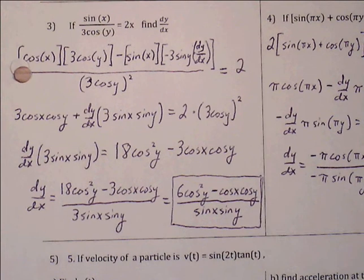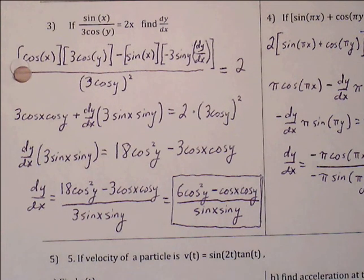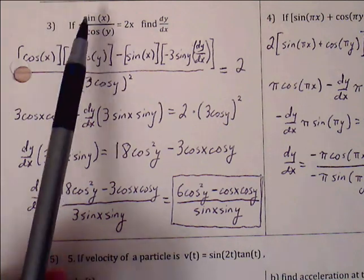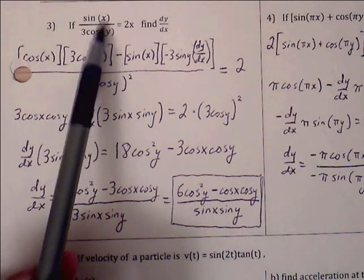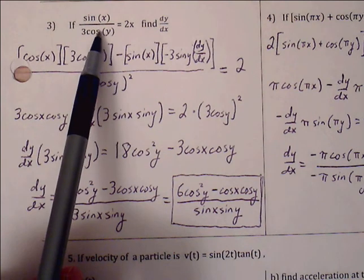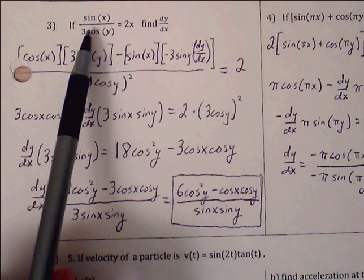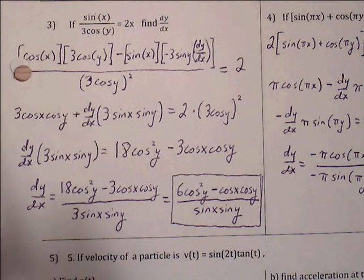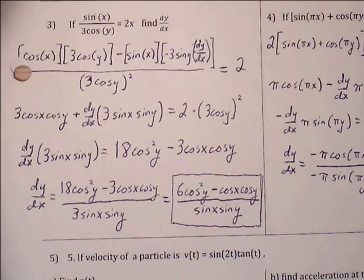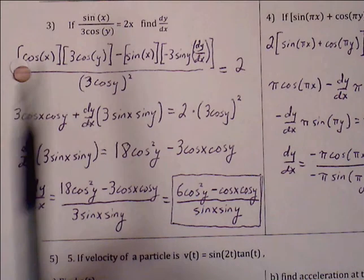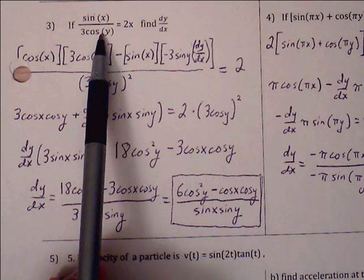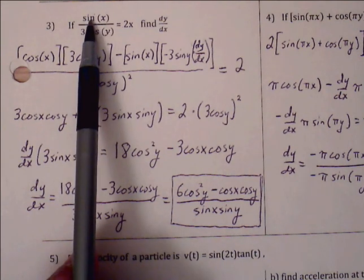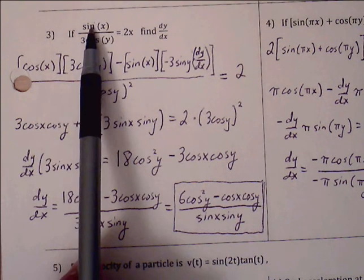Number three: if sine(x) over 3 cosine(y) equals 2x, find dy/dx. Notice that x's and y's are intermixed, and this is not solved exclusively for y equals something, so we use implicit differentiation. Applying the quotient rule: sine(x) becomes cosine(x) for f prime g, with 3 cosine(y) staying as the g term.